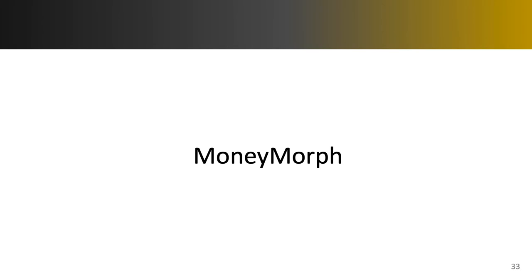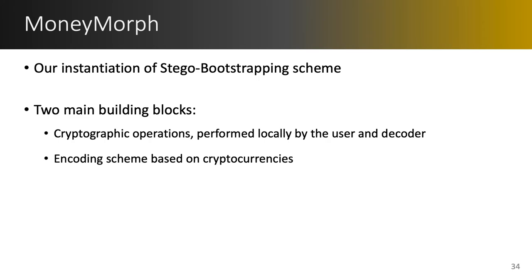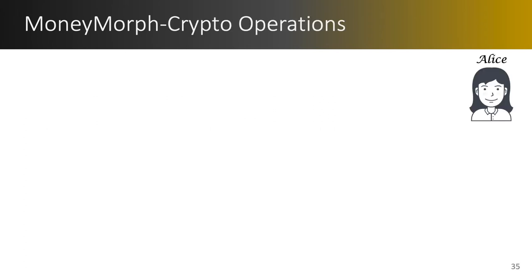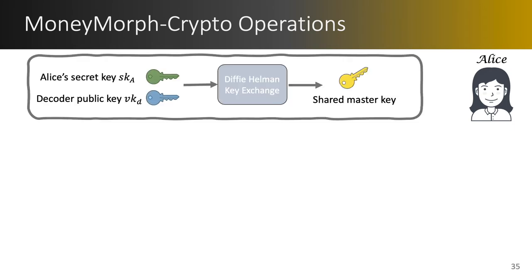Now that we have defined the stego bootstrapping scheme, let's move on to introducing MoneyMorph. MoneyMorph is our instantiation of the stego bootstrapping scheme. MoneyMorph is constructed of two main building blocks: one is the cryptographic operations that are performed locally and are independent of the cryptocurrencies, and second is the encoding scheme based on the cryptocurrencies. Let's begin with the crypto operations performed by Alice. Using her own private key and the decoder's public key and performing the Diffie-Hellman key exchange, Alice generates a shared master key.